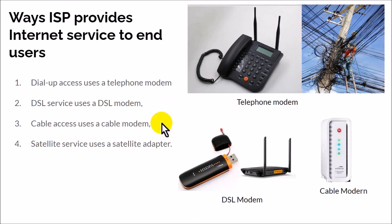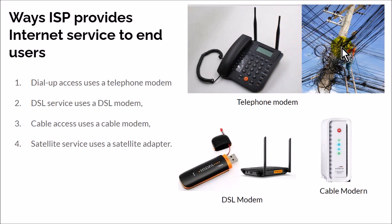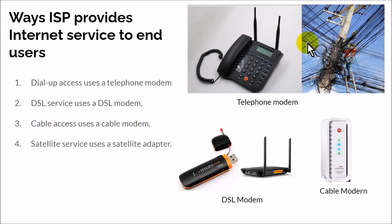How does an internet service provider make internet available in your home? One way is through the telephone modem. In major cities you find cables connected — these are one of the ways internet can be transmitted, connected to the global system of interconnected computers. Once connected through the telephone modem, from your phone line you can transfer internet service to other devices in your home.